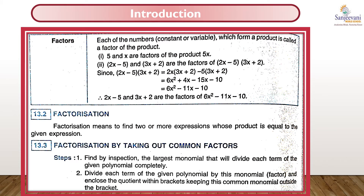Let us see what factors mean. Each of the numbers or constants, whether it is a constant or a variable, which form a product is called a factor of the product. So if I multiply two numbers and get a product, those two numbers are known as factors. For example, 5x is formed by the product of 5 and x, so 5 and x are the factors of 5x.